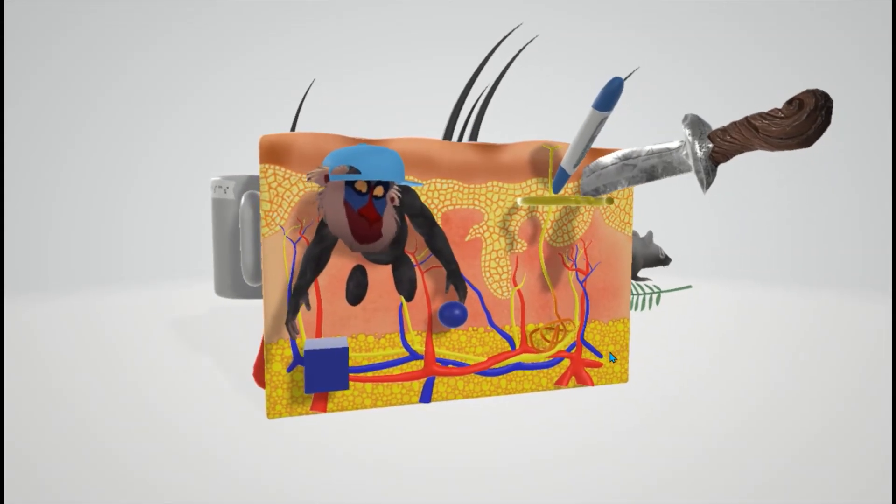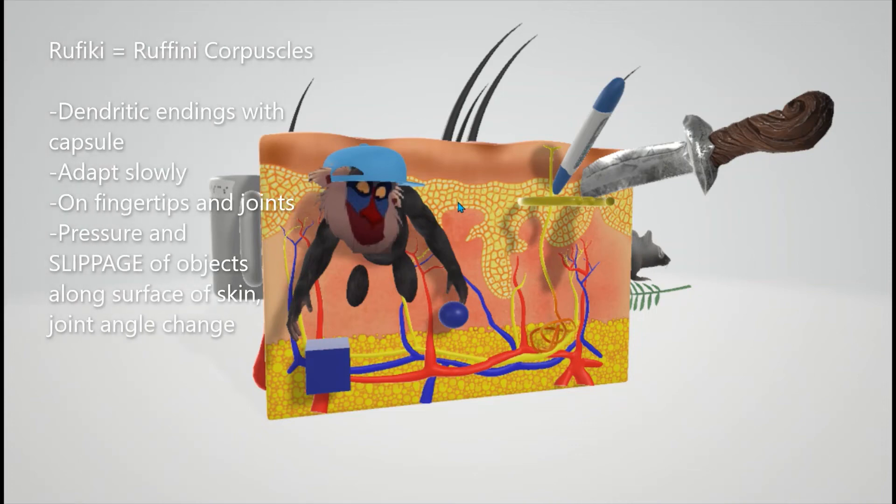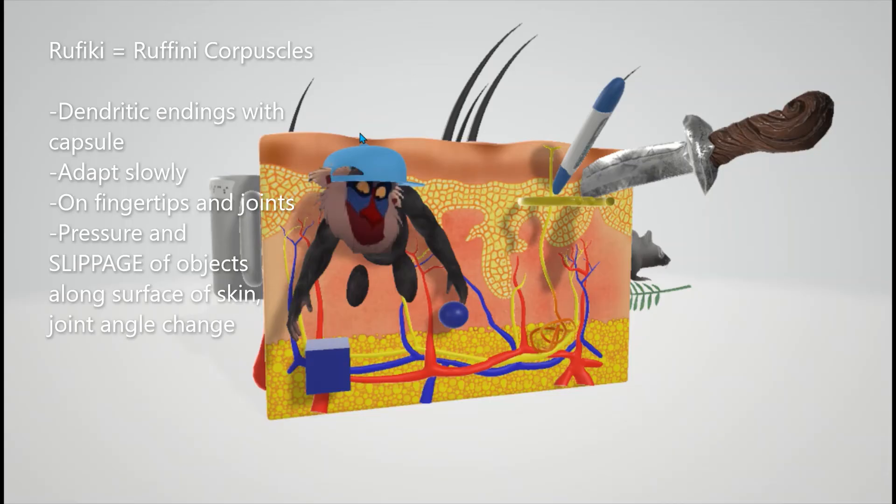Next, we have this Rafiki. Rafiki always reminds me of Ruffini, Ruffini corpuscles, and it's got a capsule. Dendritic endings with capsules. They have dendritic endings with capsules. I put a cap on top to remember the dendritic endings with a capsule.